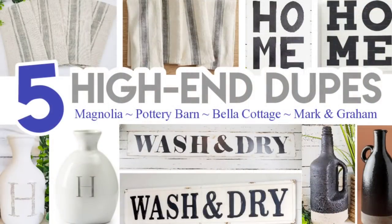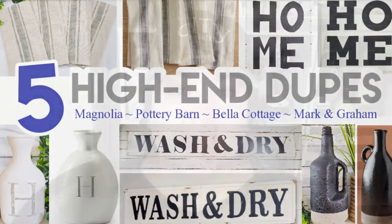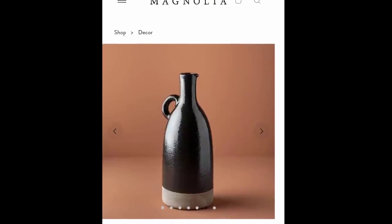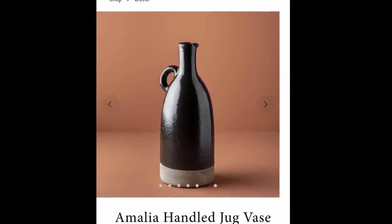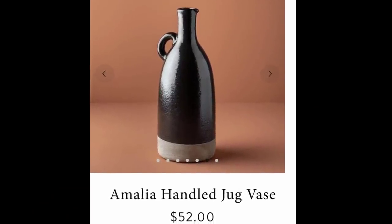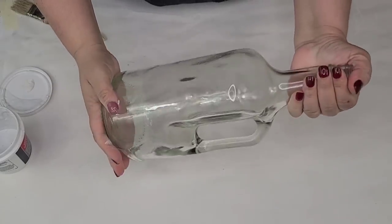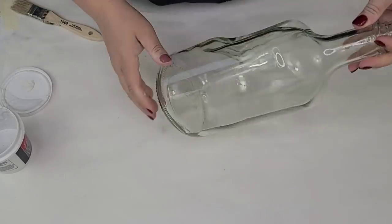I am so excited that you are here today because I have for you some really cool, really inexpensive high-end dupes you are going to love. For the first inspiration dupe comes from Magnolia, and this is the Amelia Handled Jug Vase. It's $52, and I'm going to try to recreate it with this jug.